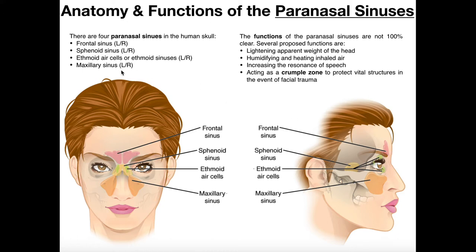The next one is the maxillary sinus. The maxillary sinus is the most inferior of these. You can see them right here flanking the nose on either side. They're going to exist within the maxilla bone — right above the mouth but beneath the eye.